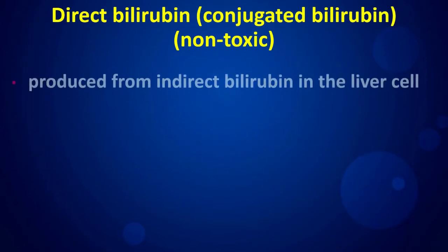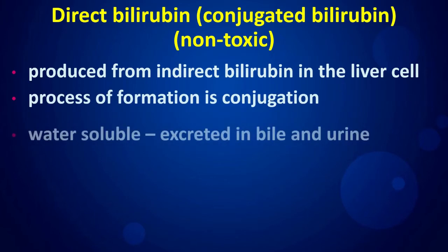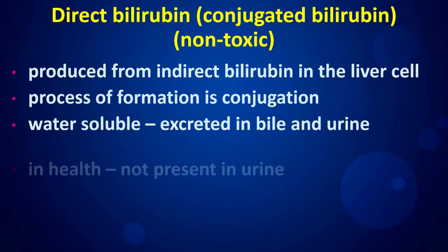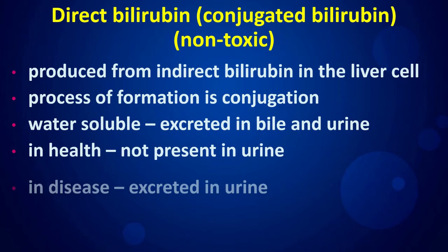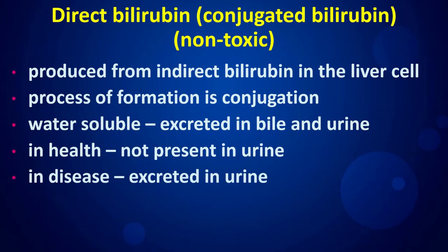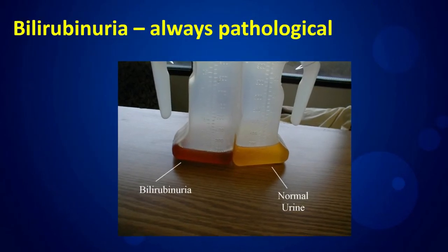Direct bilirubin is produced from indirect bilirubin in the liver cell through a process called conjugation. It is water-soluble and can be excreted in bile and urine. In health, it is not present in urine, but in disease it is excreted in urine. Bilirubinuria is always pathological.